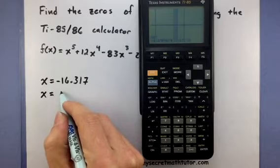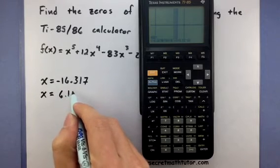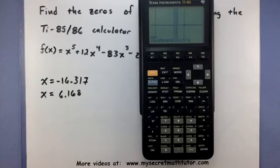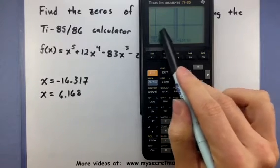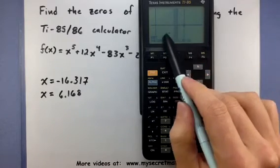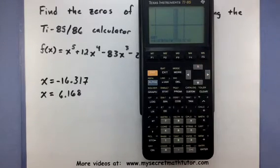Alright. So this one is located around 6.168 if we go ahead and round that one. So now that we've found these zeros kind of away from the origin, let's go ahead and readjust our window to see if we can get a better view of those ones.